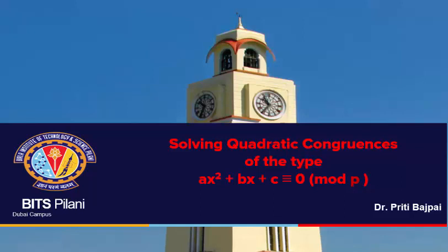Hi everyone. Today we are going to do a tutorial on solving quadratic congruences of the type ax² + bx + c ≡ 0 mod p, where p is some prime integer.